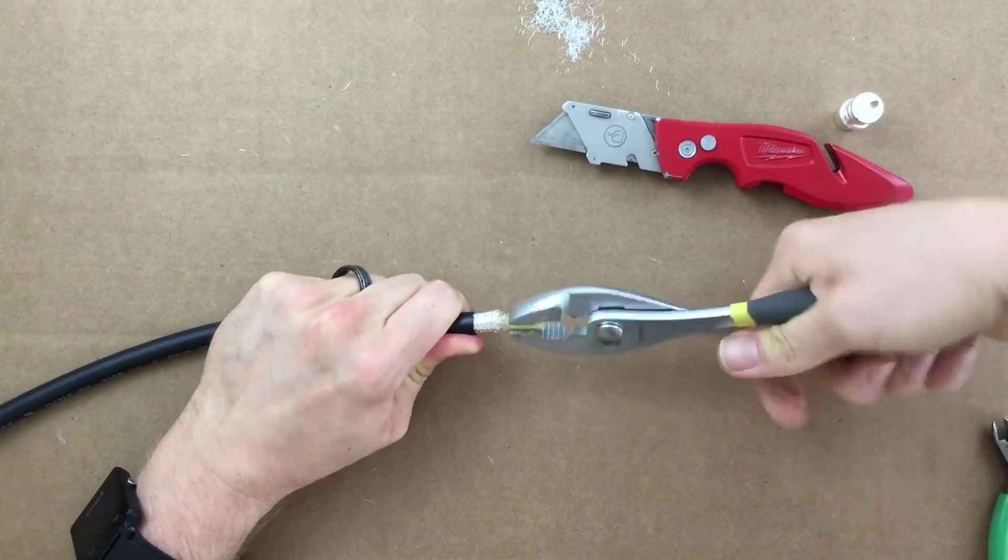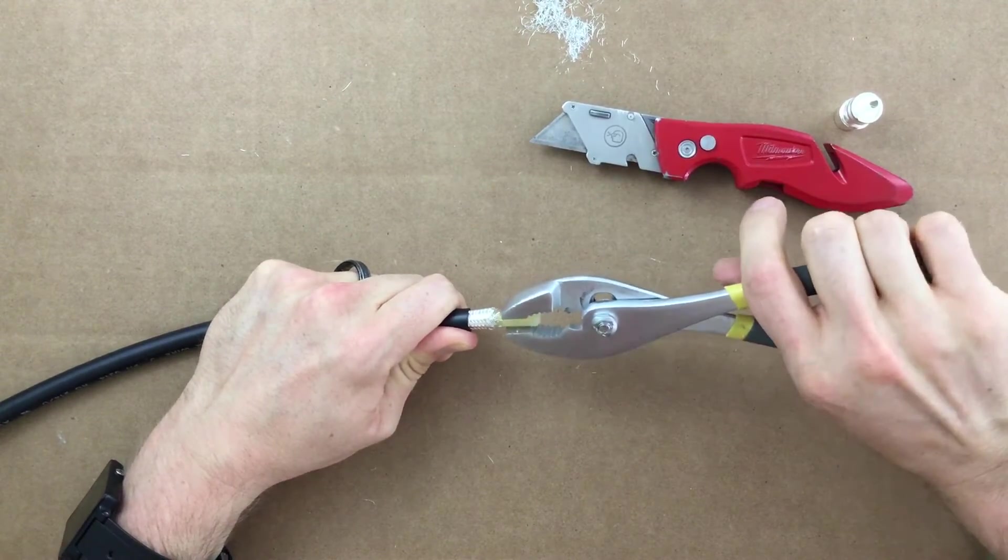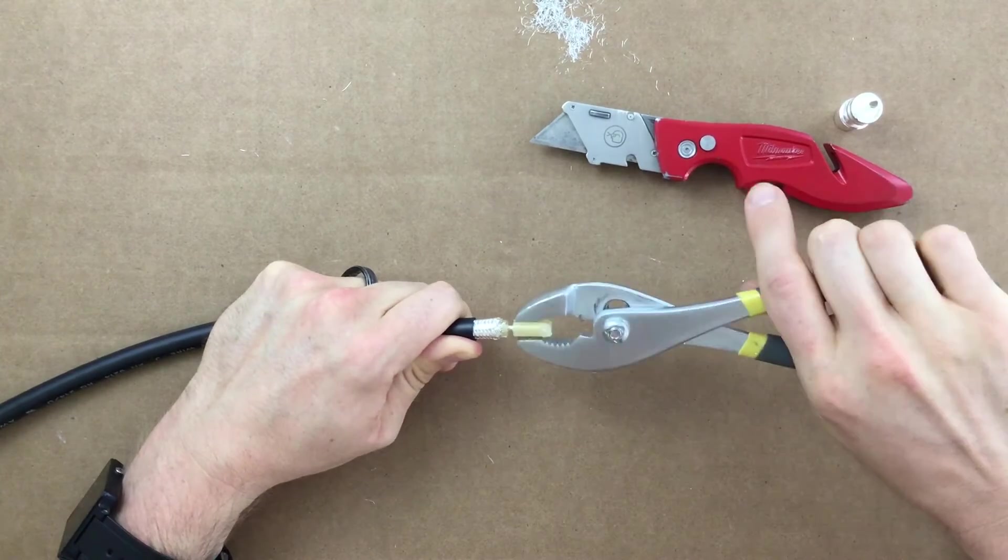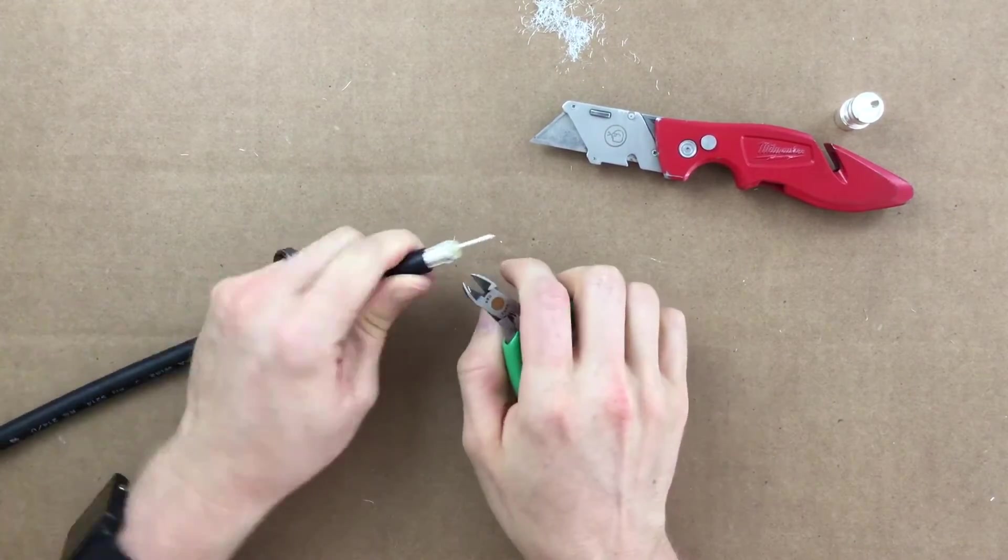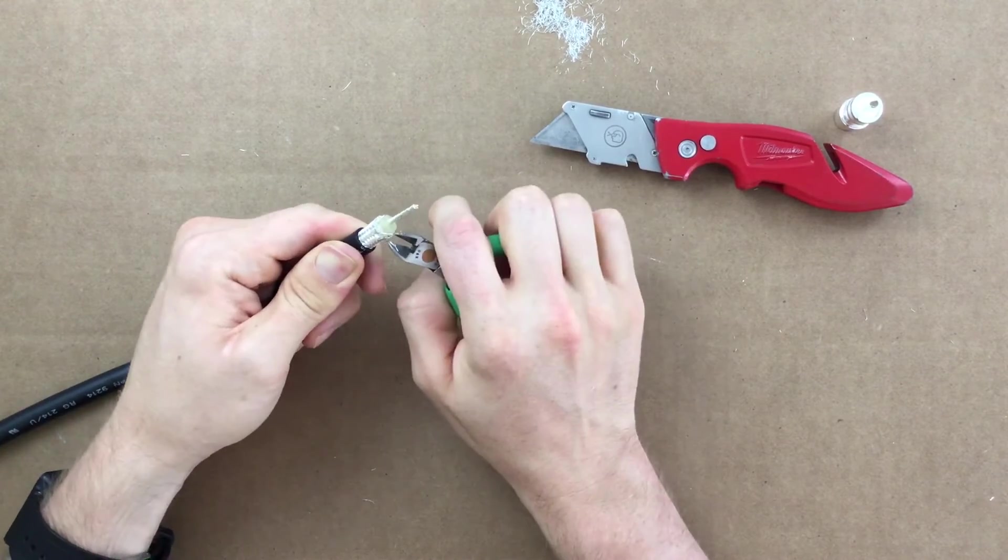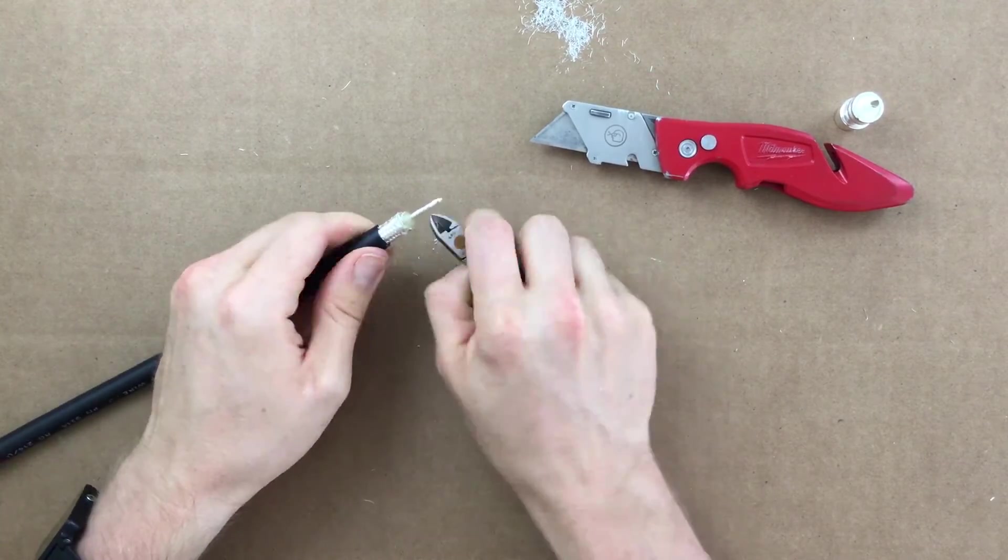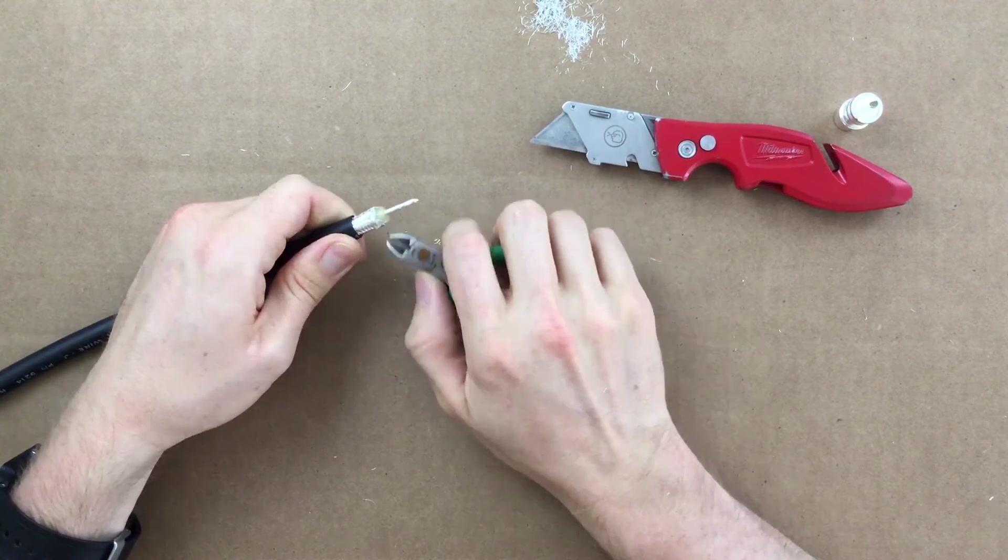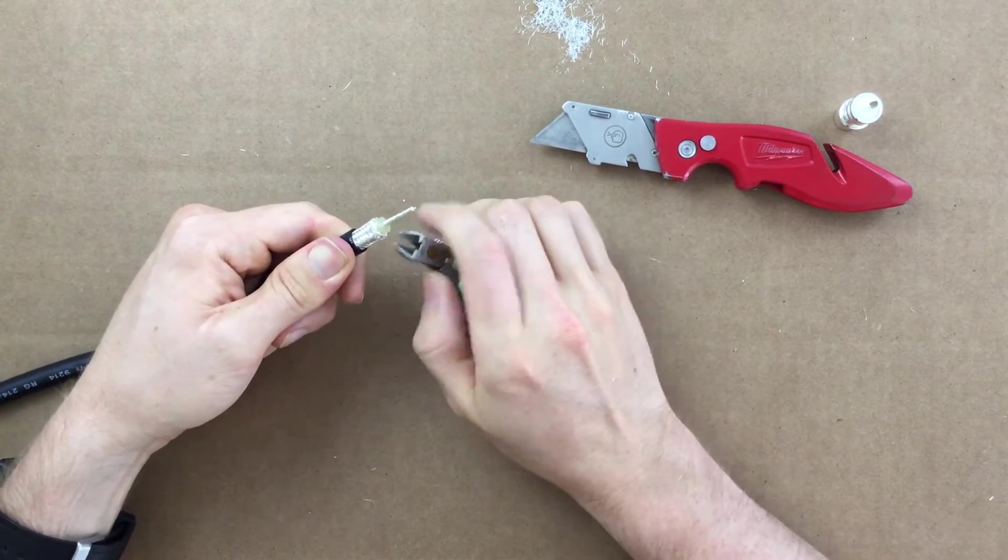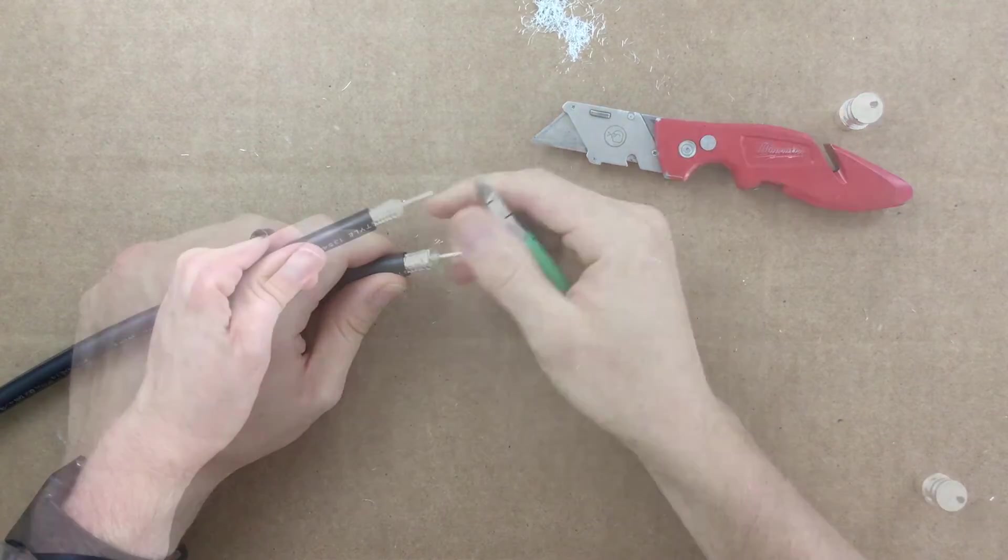Grab the dielectric piece we just cut with a pair of pliers. Pull and twist to the right clockwise to make sure the center pin stays straight. Finish trimming off any long pieces of braid so they cannot get near the center pin. The center pin and the braid must never be able to make contact. Again, be sure the center conductor is straight before proceeding.